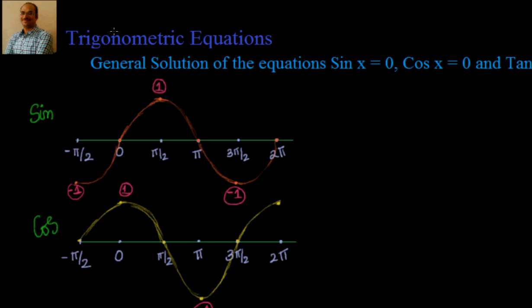We will start with sin first. We know that there are two types of solutions for any trigonometric equation. One is called the principal solution and the other is called the general solution. Why do we have a general solution? Because all the trigonometric functions are periodic functions, so there are infinite solutions for any particular equation.